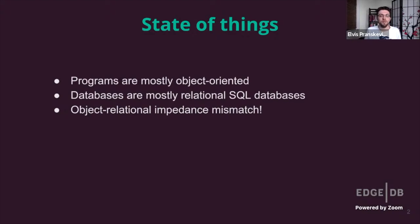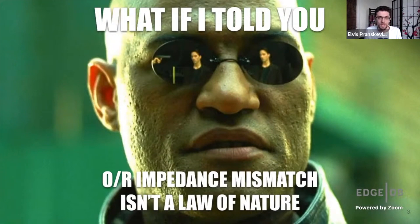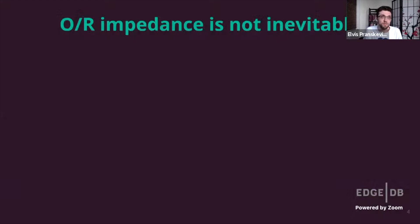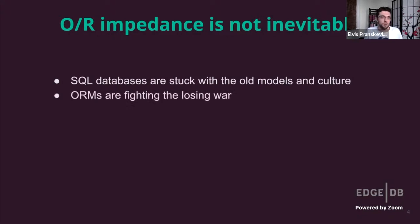It almost seems like object-relational mismatch is an inevitable fact of life and we should just accept it. Except, of course, it isn't and we shouldn't. Object-relational mismatch isn't some law of nature — it exists primarily because we let it. The SQL database world is fairly slow and is either unable or unwilling to fundamentally improve things. On the other side, the application development world has been stuck in the losing war of perpetually writing and rewriting countless object-relational mappers, or ORMs.